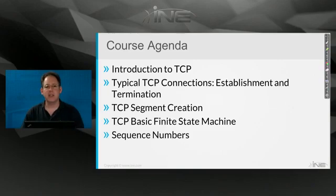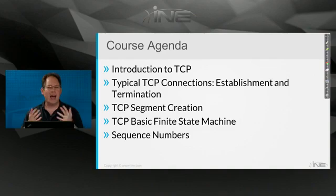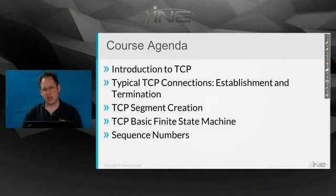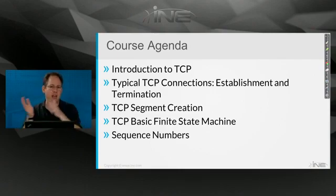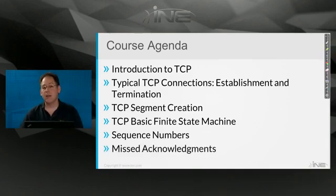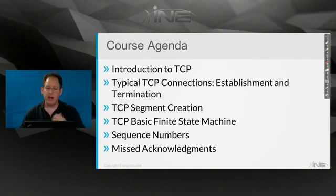We're going to go into the details of TCP sequence numbers — they're not as simple as you might expect. We'll talk about how a TCP implementation comes up with the initial sequence number, which is not simply the number one. We'll cover how sequence numbers increment and how they're used in actual segments and acknowledgements as they go back and forth. We'll also talk about missed acknowledgements — what does TCP do when an acknowledgement is missed? There's actually more than one possible response.